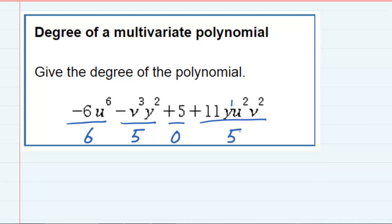So to find the degree of the polynomial, now that I know the degree of each one of the terms, the highest degree of the term is the degree of the polynomial. So for this expression, our degree is six.